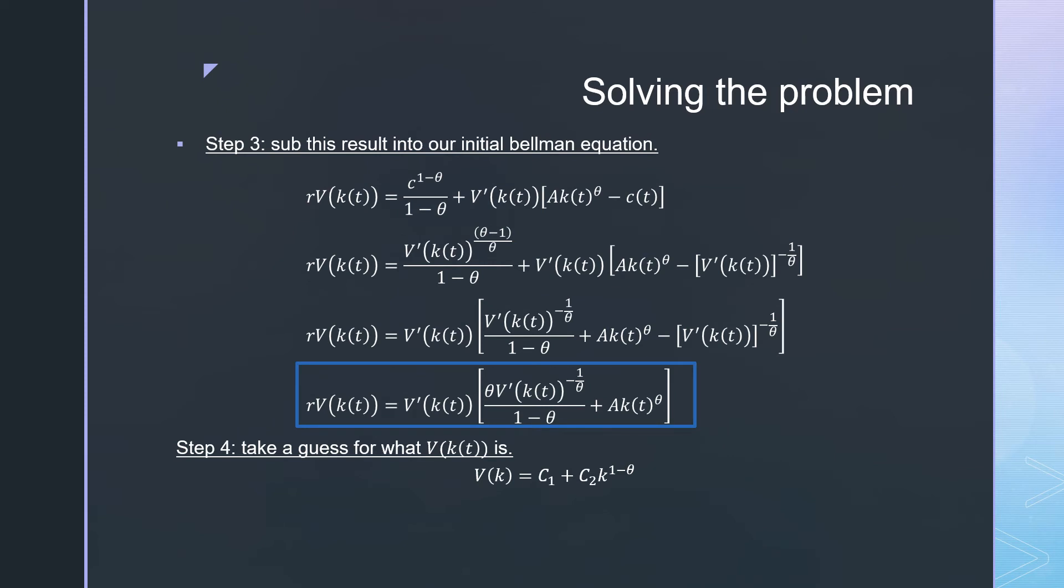Step three: sub this result into our initial Bellman equation. We take that and plug it in there and simplify it all the way down till we get this value in this circle here.